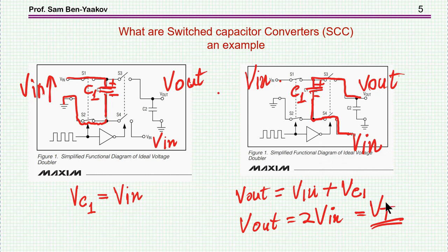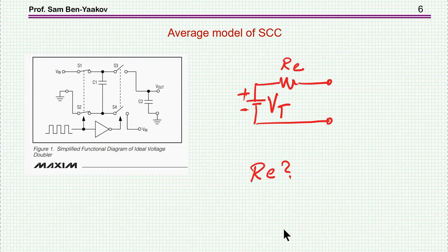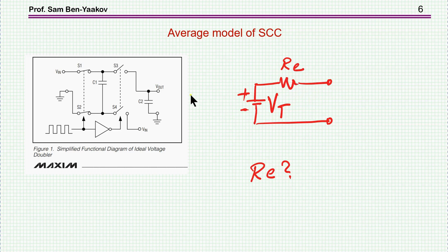This voltage is called the target voltage — the open-circuit or no-load output voltage. In this case the target voltage is twice Vin. However, if you load the unit you'd expect a drop. The conventional model is a Thevenin equivalent circuit: the target voltage with an internal resistance Re that emulates the behavior of the unit. This is an average circuit — no pulsation, just average current. When you load this unit there'll be a voltage drop, and efficiency will drop.